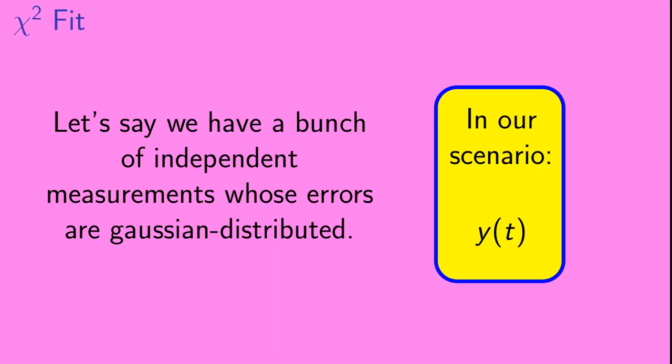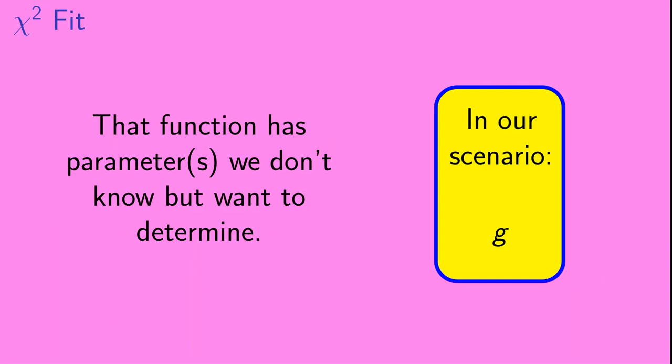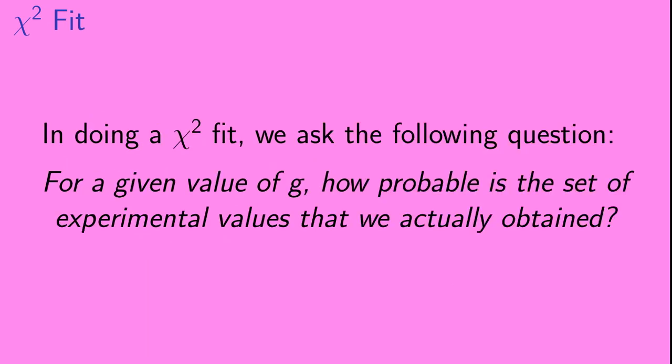Okay, so let's say we have a bunch of independent measurements whose errors are Gaussian distributed. In our scenario, these are the measurements of y of t. Also, we believe that the true values of these measured quantities are related by some function whose form we know. So, in our scenario, we believe that y of t is of the form one-half g t squared. And that function has a parameter or parameters that we don't know but want to determine. In our scenario, we want to determine the value of g.